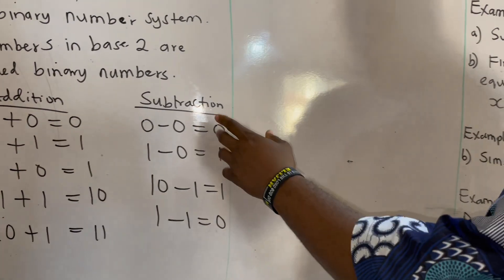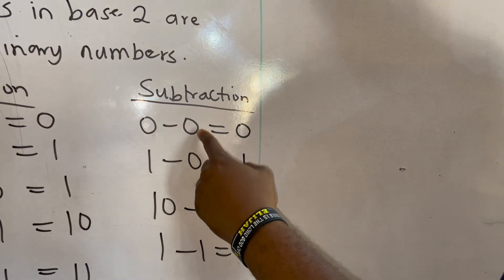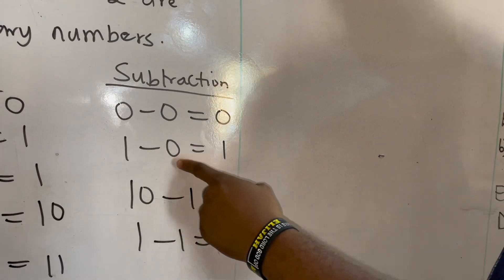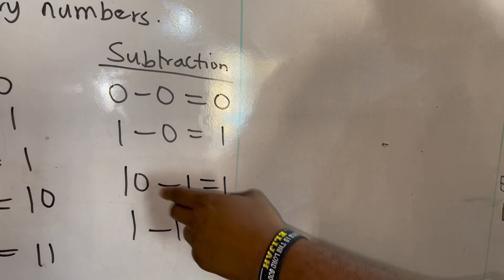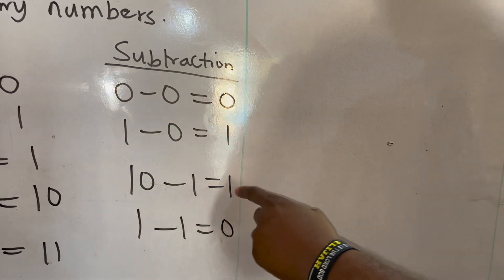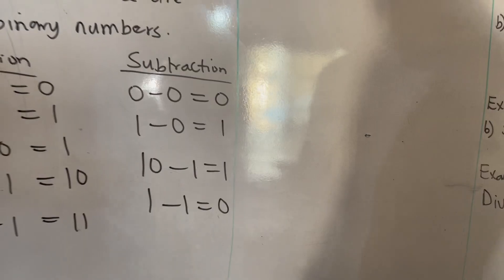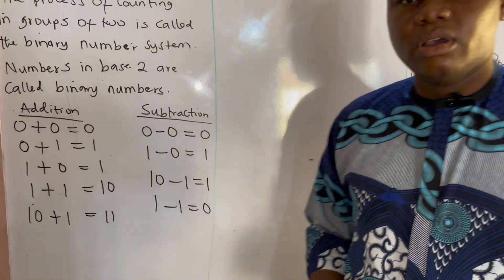For subtraction: 0 minus 0 equals 0; 1 minus 0 equals 1; 0 minus 1 equals 1 (with borrow); 1 minus 1 equals 0, all in base two.